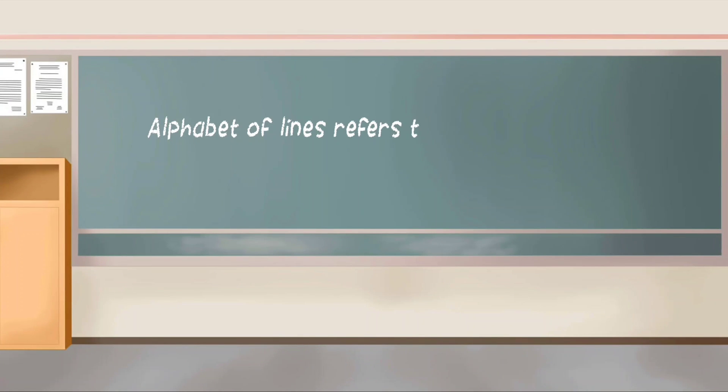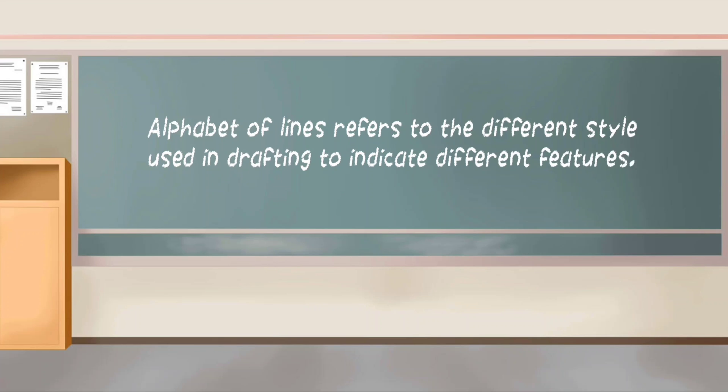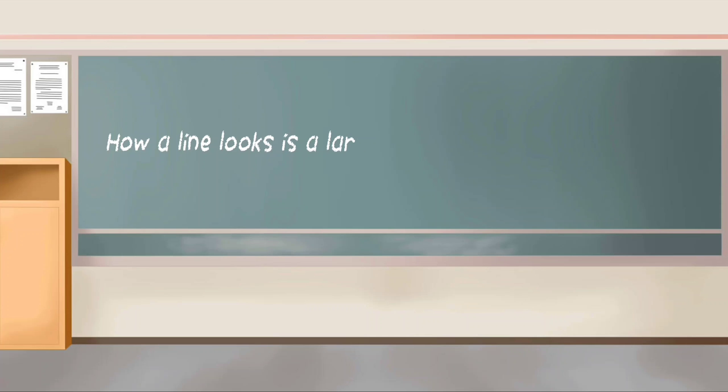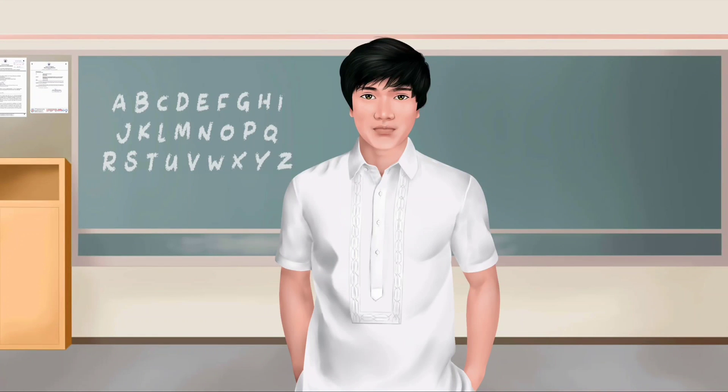Alphabet of lines refers to the different styles used in drafting to indicate different features. How a line looks is a large part of what the line means. ABCs are the building blocks of language. In order to become literate, we must be able to recognize each letter, both in order and out of order, as well as the sounds connected with that letter. Once armed with that knowledge, we are well on the road to reading and literacy.